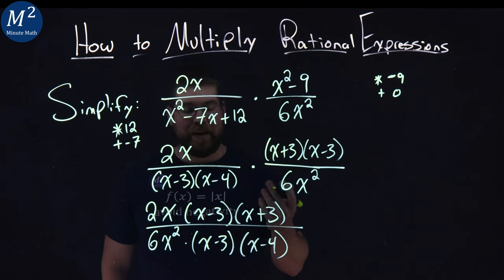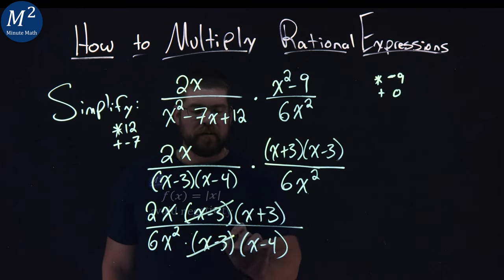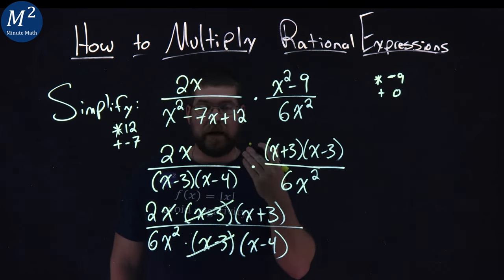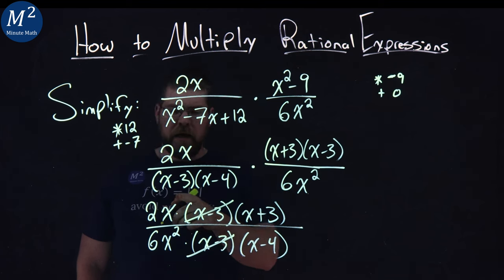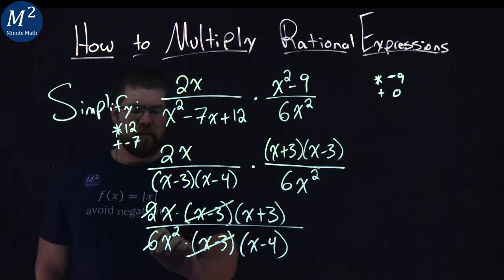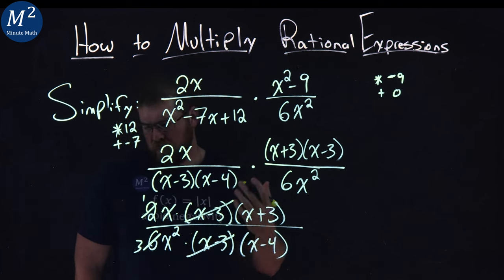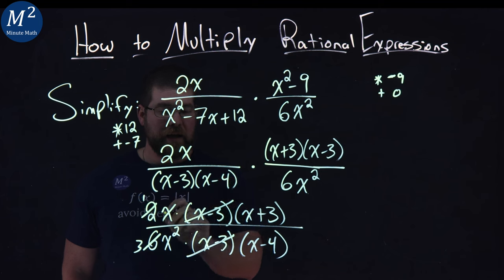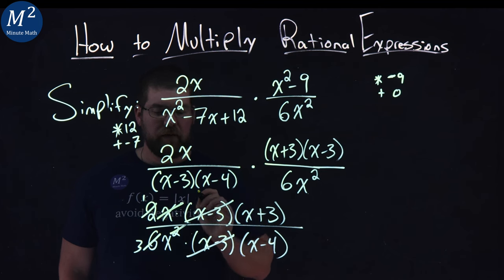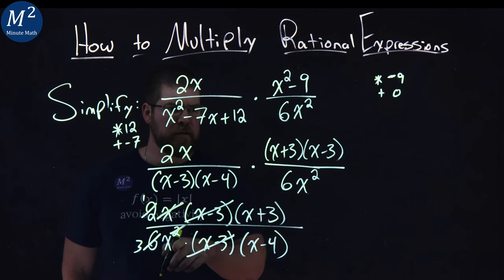And this is where the beauty comes in. What can we cancel out? x minus 3 and x minus 3 cancel out in the numerator and denominator. Here, I have a 2 and a 6, it cancels out, a 2 becomes a 1 and 6 becomes a 3. 2, 6 is a 1 third. x over x squared, I can cancel out this top x and get rid of this square and keep the bottom single x.